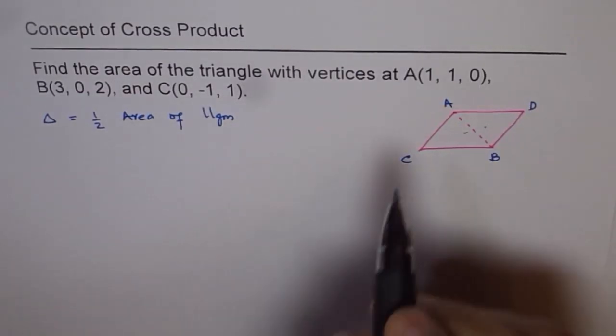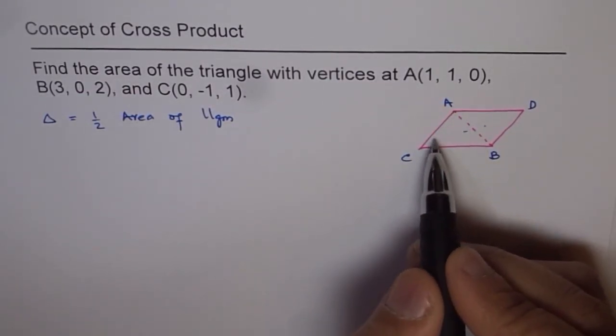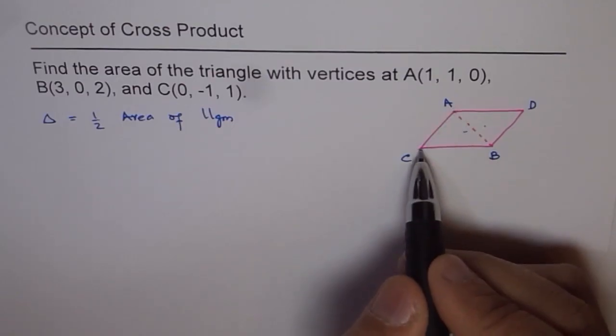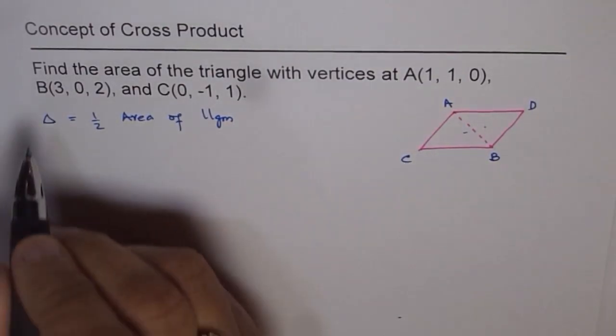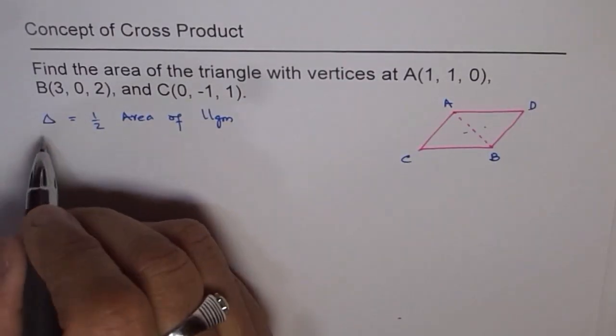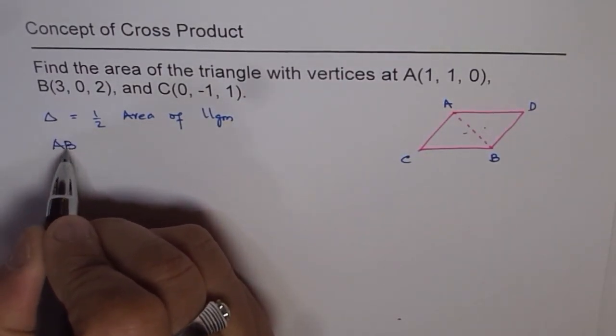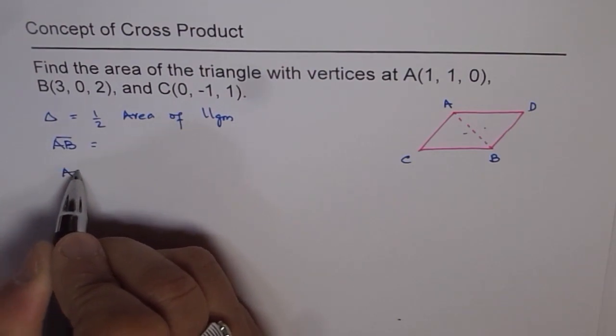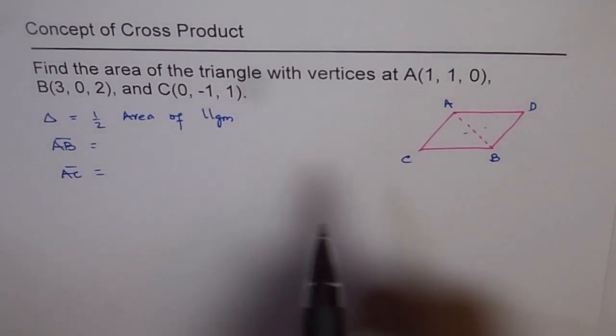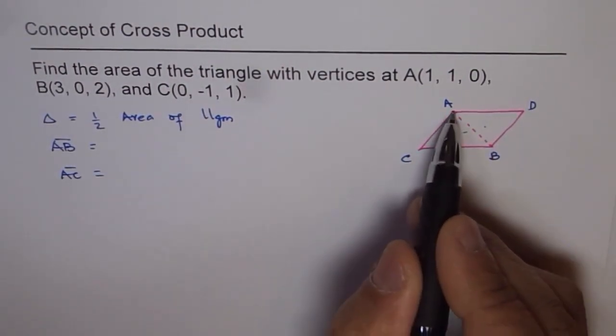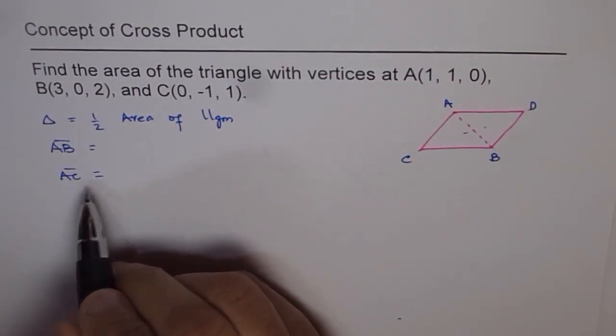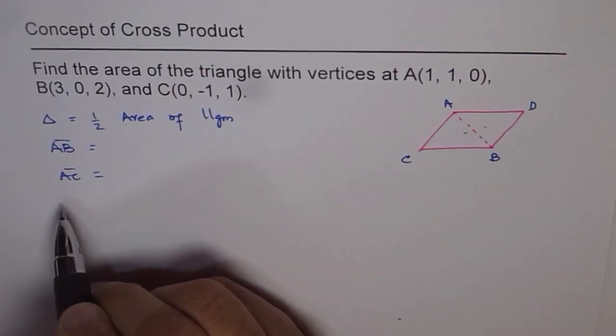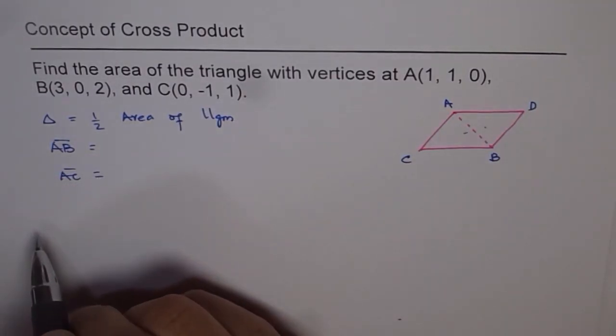And what is area of parallelogram? Area of parallelogram will be cross product of two sides. So what we will do here is we will find the two sides, which is AB and AC. So once we have two sides, then we can do cross product of AB and AC, and half of that and its magnitude will give us the area.